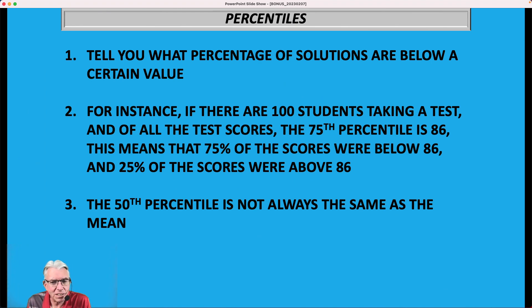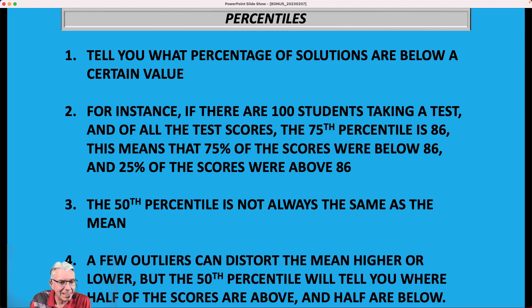Now the 50th percentile is not always the same as the mean. You might think it is, but it's not. A few outliers can distort the mean higher or lower, but the 50th percentile basically tells you the middle of the pack. Half the scores are above that, half the scores are below that. And sometimes the mean is very close to the 50th percentile, but not always. Again, it has a lot to do with whether or not you have a couple of really weird outliers that don't really fit in with the rest of the data.